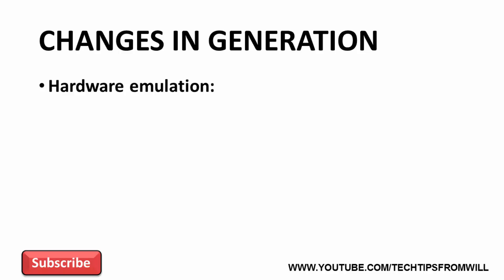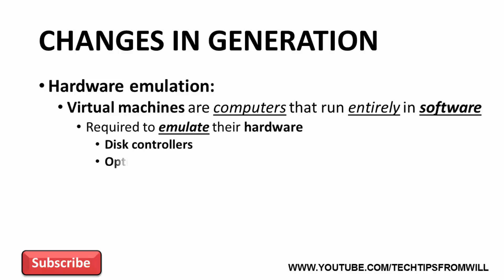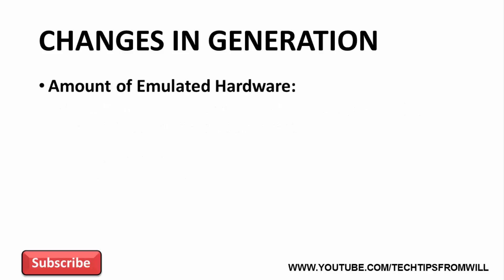The majority of changes between Generation 1 and Generation 2 virtual machines are related to hardware emulation. Because virtual machines are computers that run entirely in software, they are required to emulate their hardware — that is, to simulate all of the hardware found in regular computers, such as disk controllers, optical drives and network cards. This is called hardware emulation. The first major difference between the two generations is the amount of hardware being emulated.